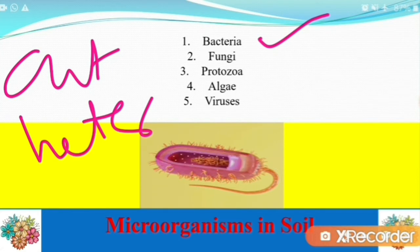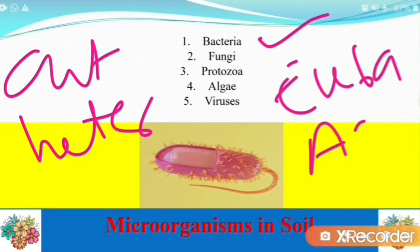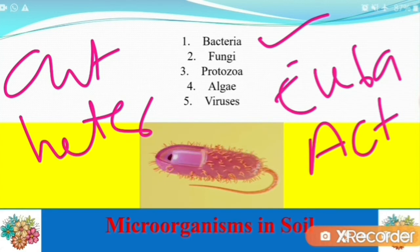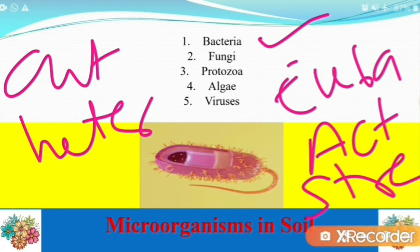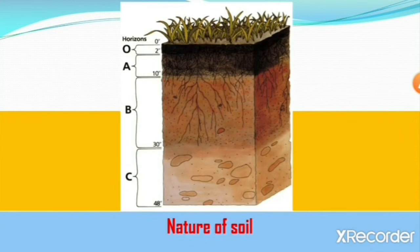Some bacteria belong to the order Eubacteriales and some belong to the order Actinomycetes, which are mainly found in the soil. The latter group is most frequently represented by organisms generally known as Streptomyces, Nocardia, etc.